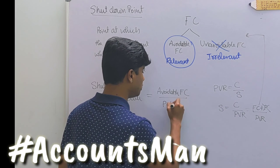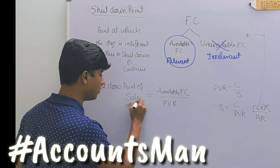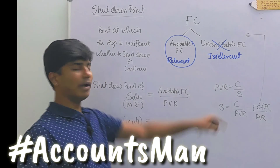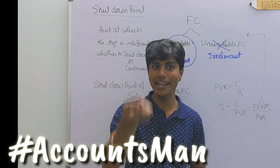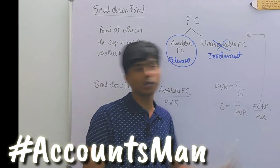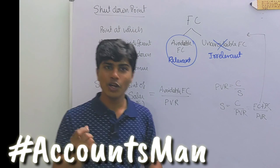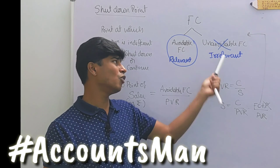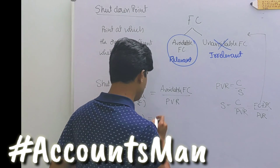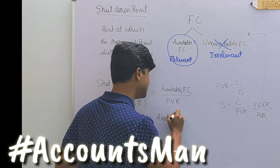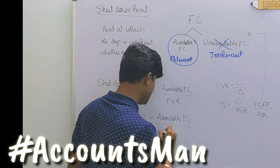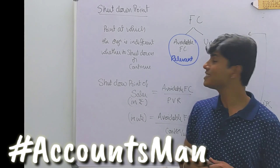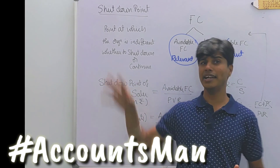That gives the shutdown point of sales in rupees. To find it in units, we go back to: total contribution / contribution per unit. Since there is no profit element, it becomes fixed cost / contribution per unit. Fixed cost has avoidable and unavoidable parts; since unavoidable is irrelevant, the formula is: avoidable fixed cost divided by contribution per unit. This gives the shutdown point of sale in units.